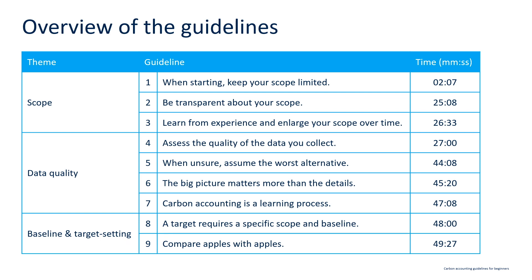When starting, keep your scope limited. Be transparent about your scope. Learn from experience and enlarge your scope over time. These three guidelines belong to the theme of scope. Then we have: assess the quality of the data you collect; when unsure, assume the worst alternative; the big picture matters more than the details; and carbon accounting is a learning process — these four guidelines belong to the theme of data quality. A target requires a specific scope and baseline, and compare apples with apples — these two last guidelines belong to the theme of baseline and target setting.